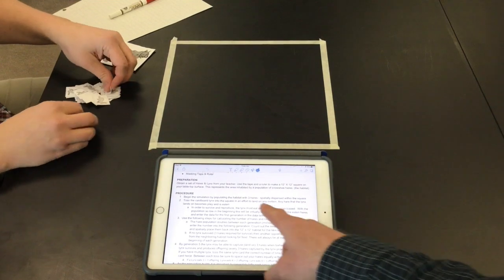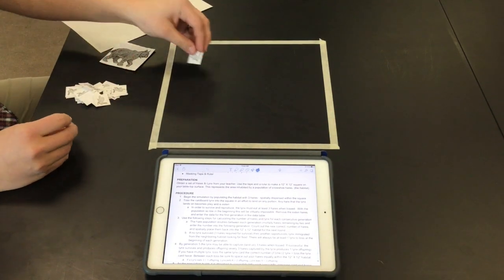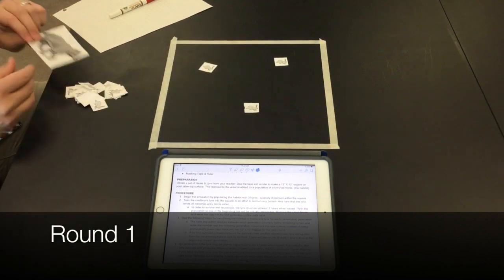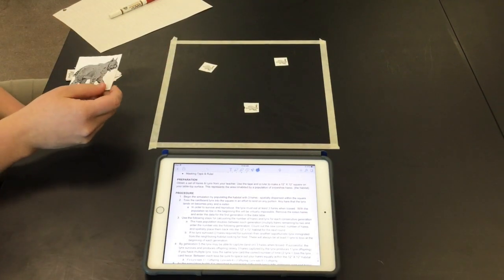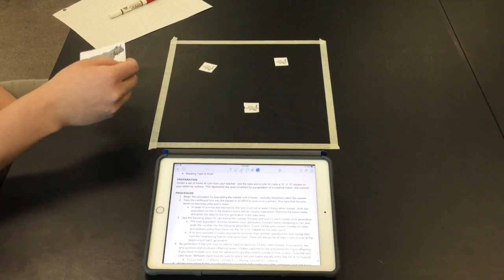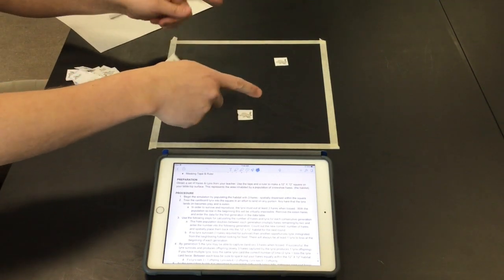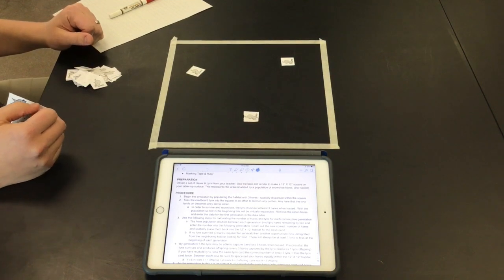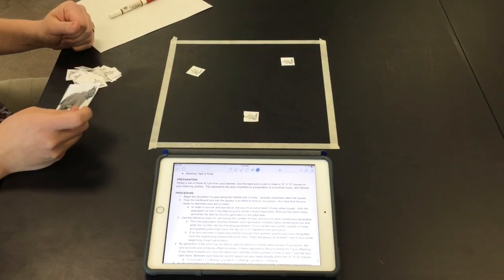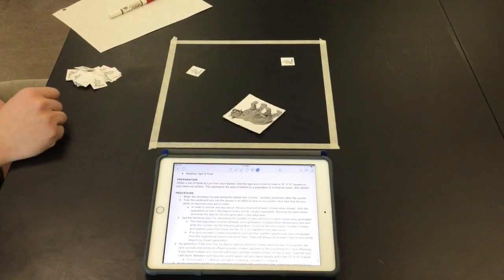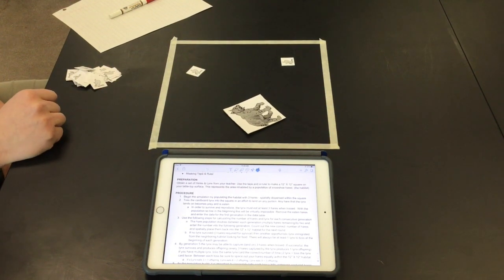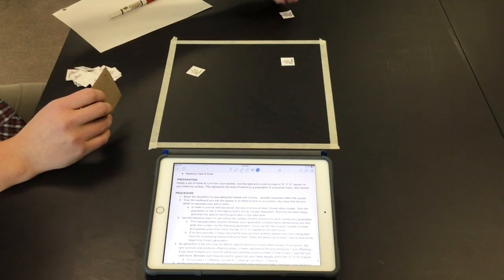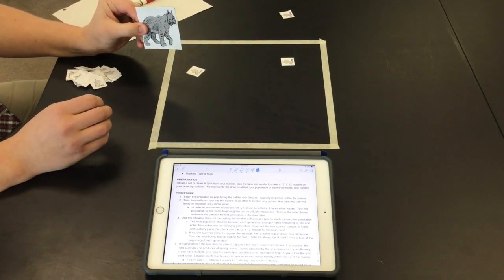So to begin the simulation, step one just says equally distribute three hares on the habitat. And then step two is just tossing the lynx onto the square in an effort to land on any portion. And something too that's important is equally space these out each time it says to do that within the instructions and make sure you spread them out between each toss. Any hair that the lynx lands on becomes prey and is eaten. And then in order to survive and reproduce, the lynx must eat at least three hairs when tossed.